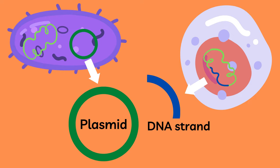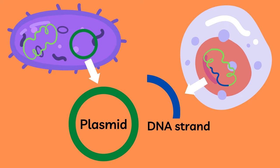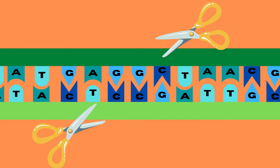The plasmid from the bacteria is combined with the gene of interest that has been isolated. This plasmid is a separate piece of circular DNA located in the bacteria, and when we look closer at it we can see that it consists of complementary DNA strands, just like with normal DNA.